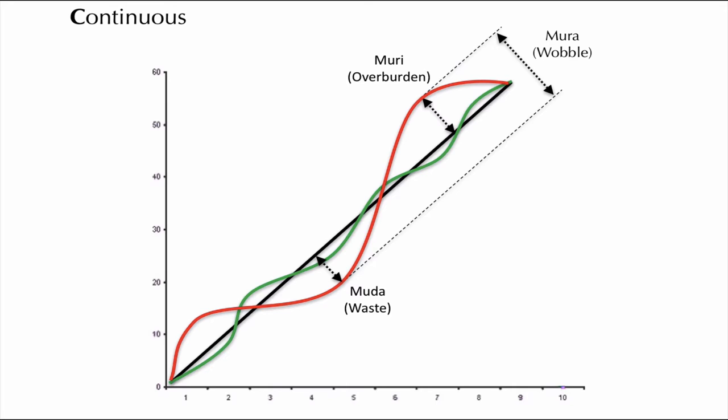The Agile Manifesto stands against this with its principle of sustainable pace. Clearly the green curve is a lot less wobbly than the red one. Indeed, it's leaner. But both curves meet expectations in the end, so why do we think the red one is worse?